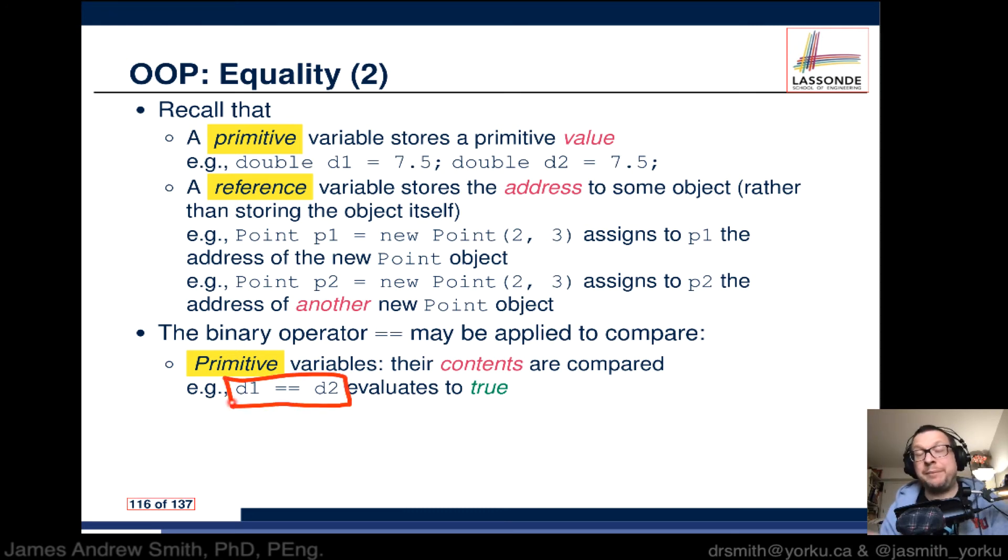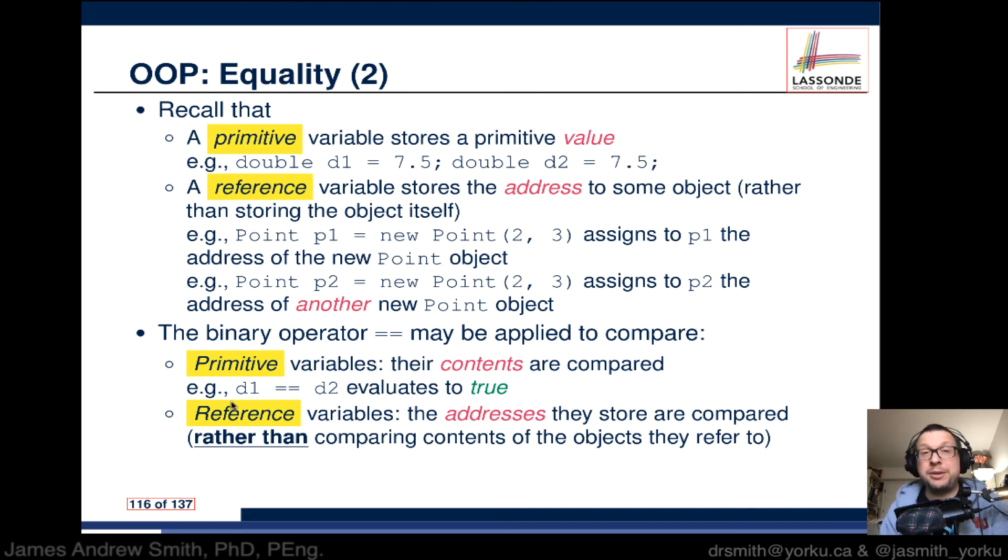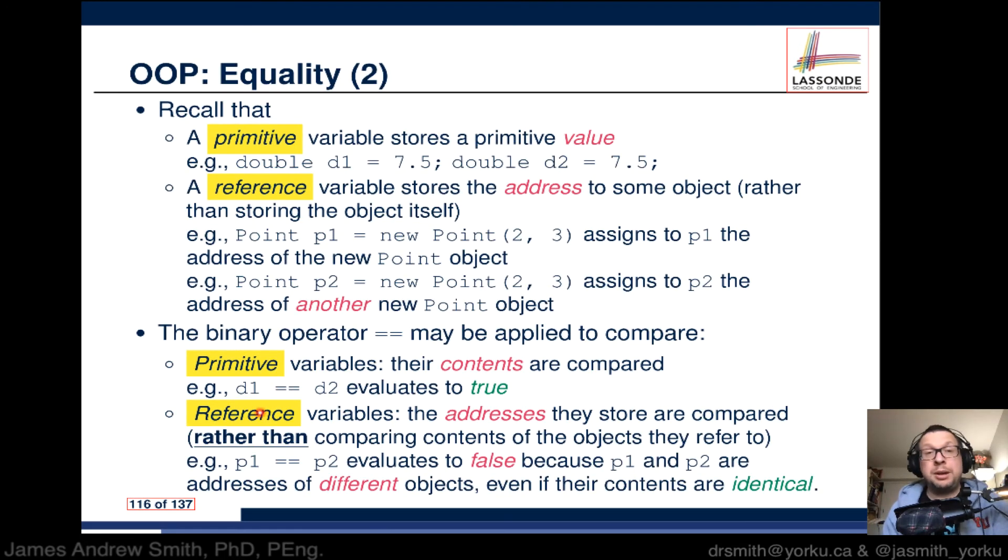On the other hand, reference variables - the addresses they store are compared rather than comparing the contents of the objects they're referring to. So when we do p1, that's an object not a variable like d1 - p1 and p2, if we do equal equal, this will evaluate to false because the locations of those two objects in memory are different.